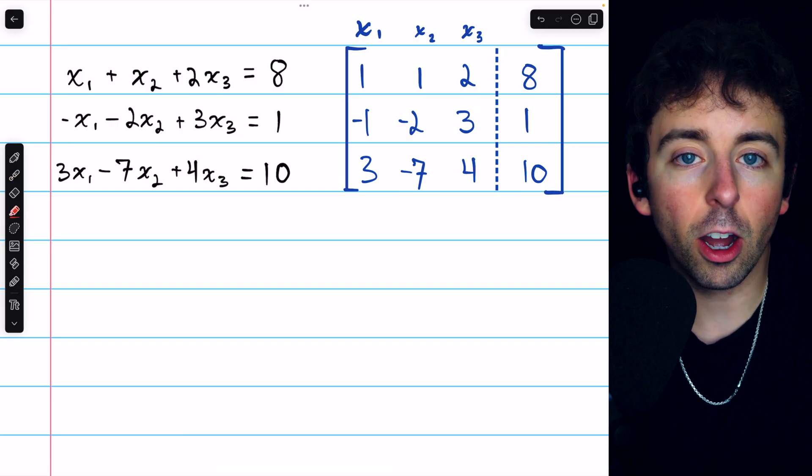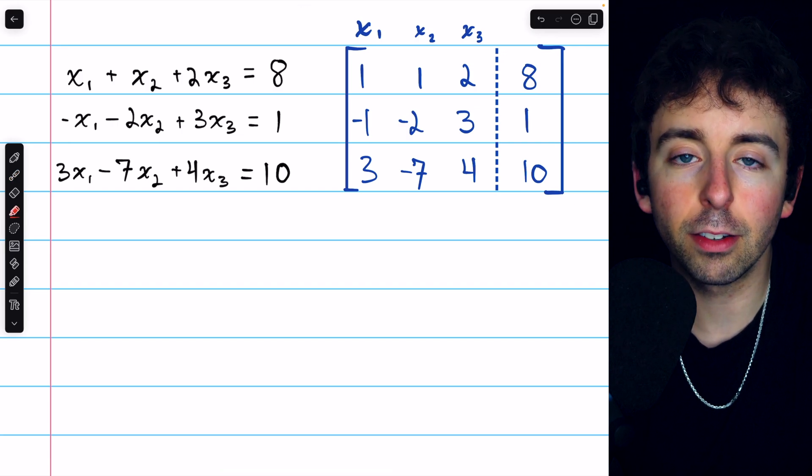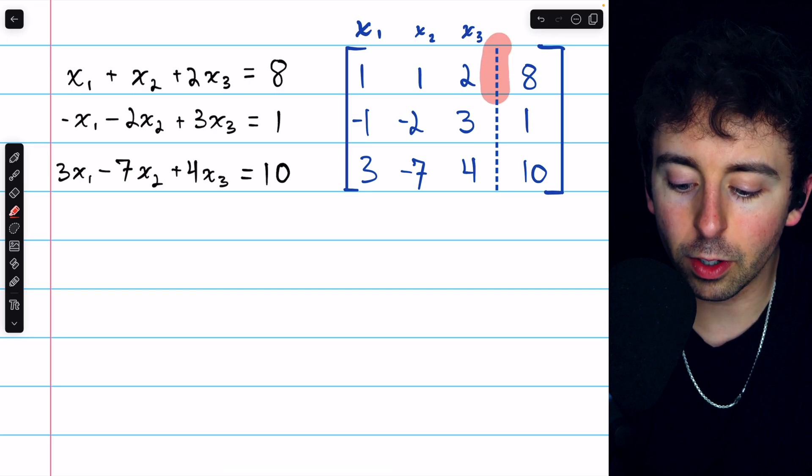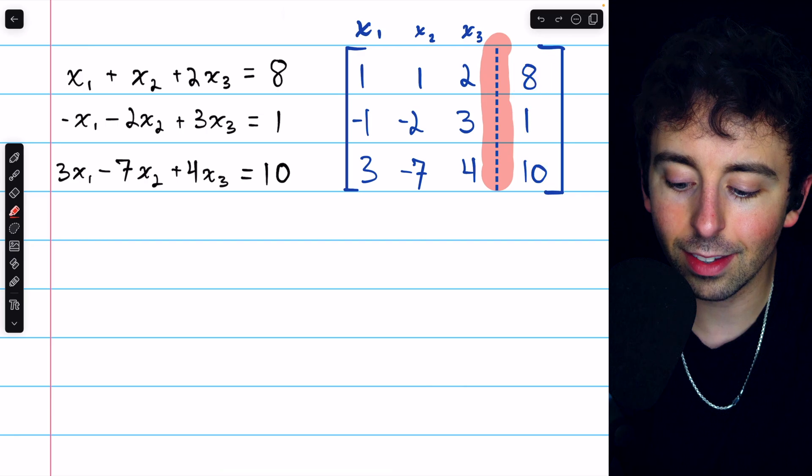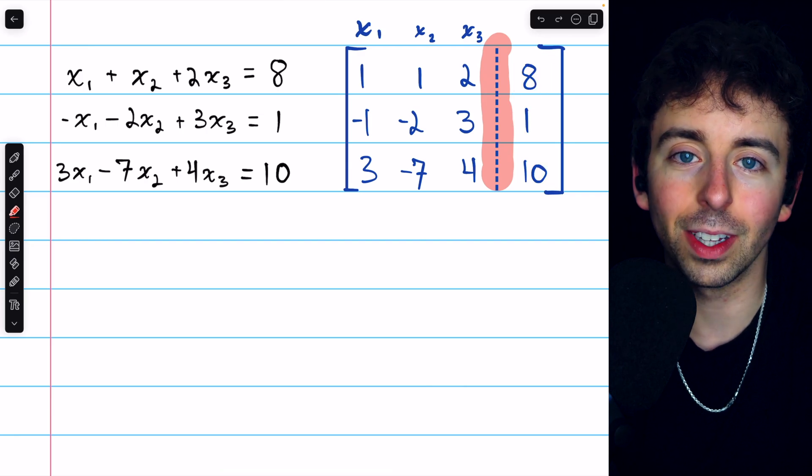When we create an augmented matrix to represent a system of linear equations, it's common to have a vertical line like this separating the coefficients from the constants. However, it isn't totally necessary.